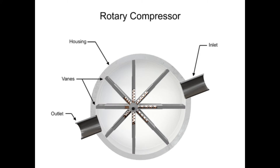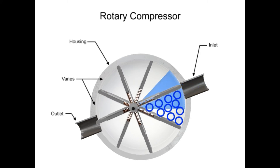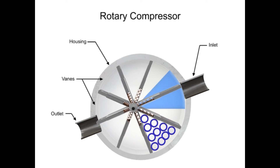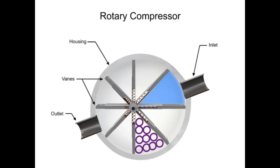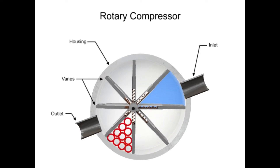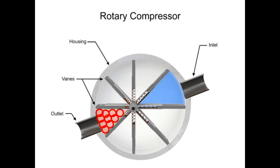Air enters at the largest chamber. As the vanes rotate, they retract, causing the chamber to get smaller and compress the air. Air exits at the smallest chamber.